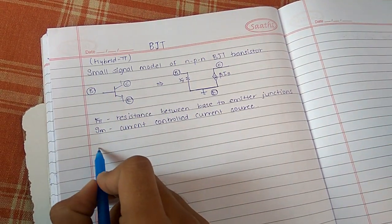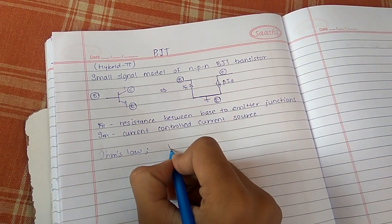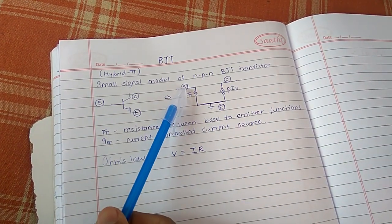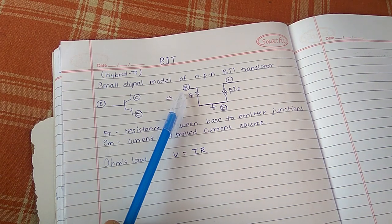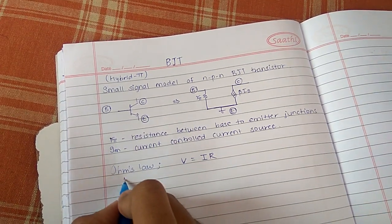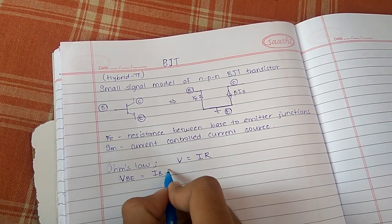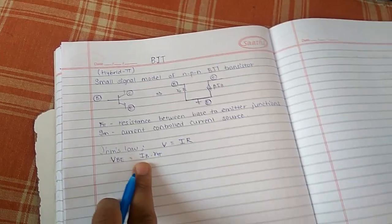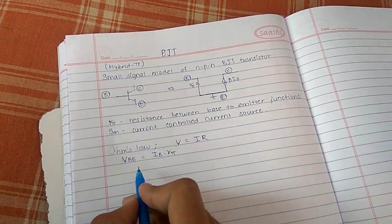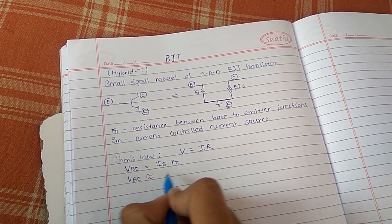As we know Ohm's law — V is equal to I into R. Now this is the base to emitter voltage. From Ohm's law we can say that VBE must be equal to IB into Rpi, since IB current flows through the base to emitter junction. So now VBE can be replaced by VT.